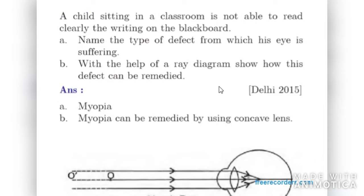Next question: a child sitting in a classroom is not able to read clearly the writing on the blackboard. Name the type of defect from which his eye is suffering. It is myopia, as the child is not able to see the blackboard clearly.